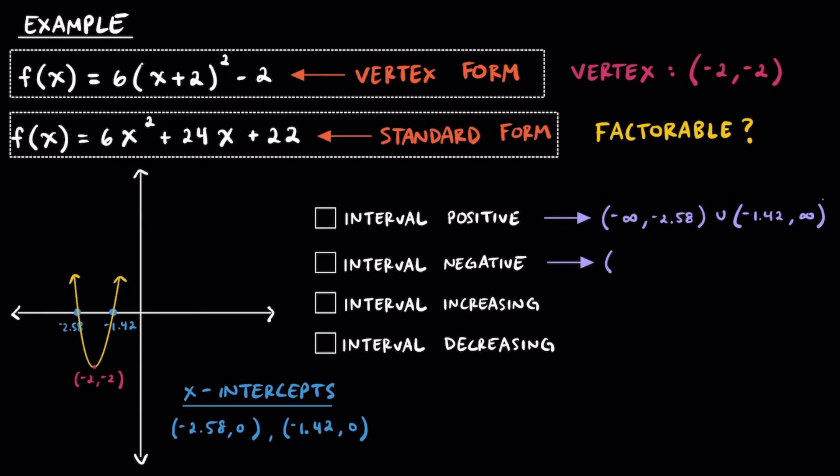For the interval in which this quadratic is negative, it's from -2.58 to -1.42. Hopefully you can see that shown here, where the parabola is below the x-axis, or when it has negative y values.